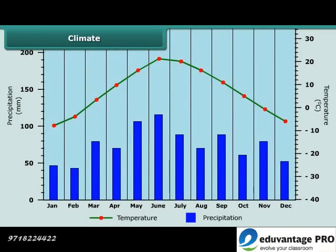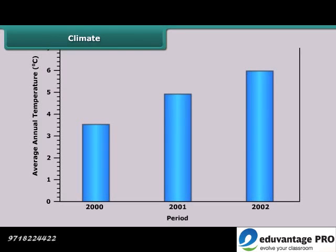For recording climate conditions, the mean temperature of a given month for a particular place is found in two steps. First, the average of the temperatures recorded during the month is calculated.